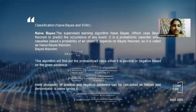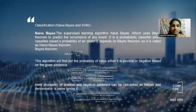Coming to the classification, we use two algorithms: Naive Bayes and SVM. Naive Bayes is a supervised machine learning algorithm, also known as a probabilistic algorithm, because it is based on Bayes theorem. Bayes theorem calculates probability based on prior conditions. Naive Bayes calculates the probability of every word and then classifies the result.